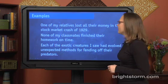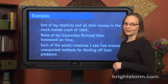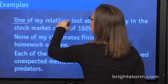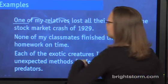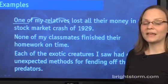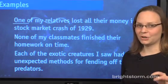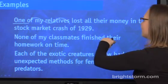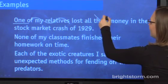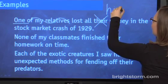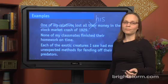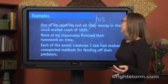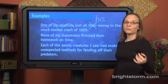First up: 'One of my relatives lost all their money in the stock market crash of 1929.' Here we have the singular word one. We're not going to pay attention to 'of my relatives' because it's a prepositional phrase. One is singular, so we have to say 'his money' if we know it's a guy, 'her money' if we know it's a woman, or 'his or her' if you don't know. One is singular, his is singular — problem fixed.